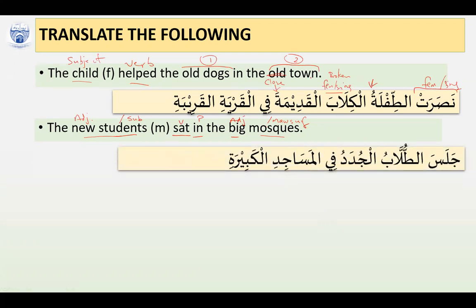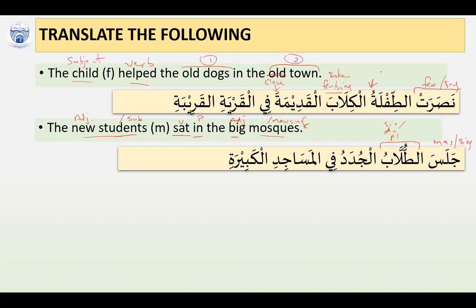We have 'Jalasa Al-Talabu.' Even though we are speaking about plural students, notice the form of the verb used — the masculine singular form. The masculine singular form of the verb is used even though the subject can be singular, dual, or plural. Once the subject is feminine, we use the feminine singular form of the verb, whether it was dual or plural. This happens when the verb starts the sentence.